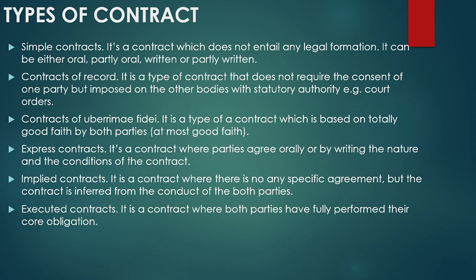Contract of record is a type of contract that does not require the consent of one party but is imposed on other bodies with statutory authority. For example, court orders can be imposed without the consent of other parties and are still a binding contract.